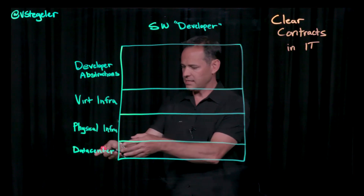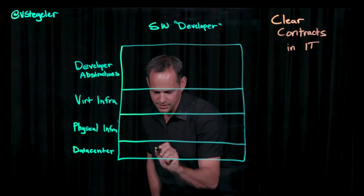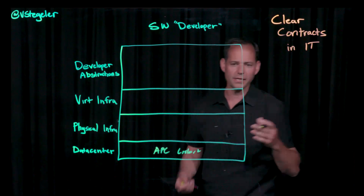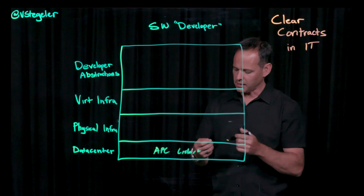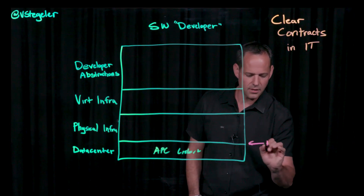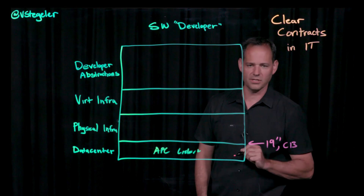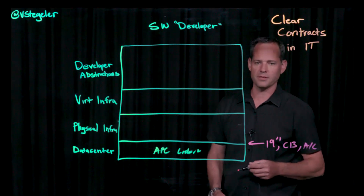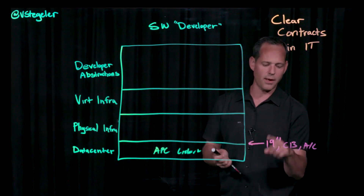If we take a look at the data center, the facilities folks are choosing vendors like APC and Liebert for cooling, racks, and all sorts of things. The clear contract that they have with the physical infrastructure folks is that they're providing a 19-inch rack, some specific type of power plug, and air conditioning. They have a contract with the infrastructure team that says: here are the parameters you get to work with.